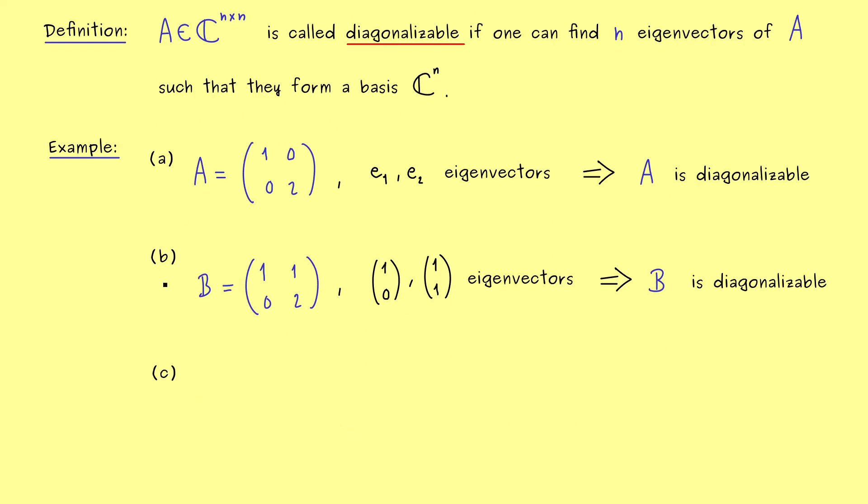Hence, this triangular matrix B here is also diagonalizable. And a good exercise here is to write down the matrix X and the matrix D for this case. It's not so complicated and then you can check that you can actually transform B into diagonal form. Now this triangular matrix was diagonalizable, but not everyone is.